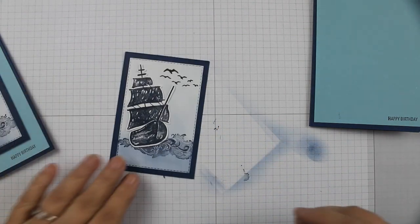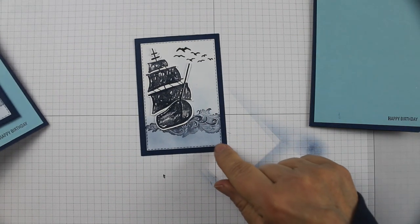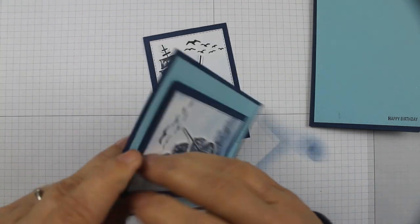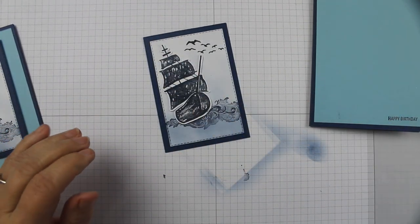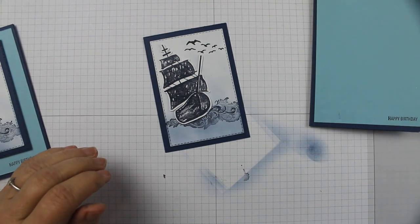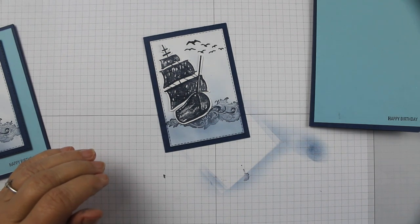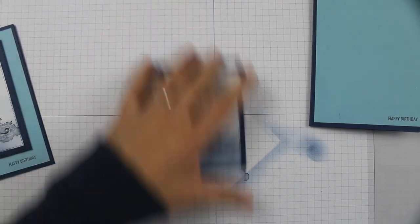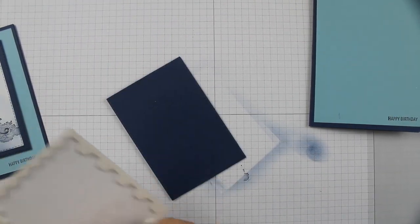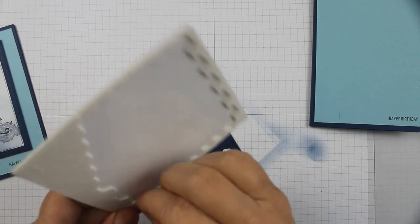I'm going to turn that over, kind of get the glue all stuck on there, right? Okay, now I popped this piece up - I don't know if you can see that - but I used some dimensionals. Let me get my dimensionals. Oops, those are the little ones, I don't want the little ones, I want the bigger ones.